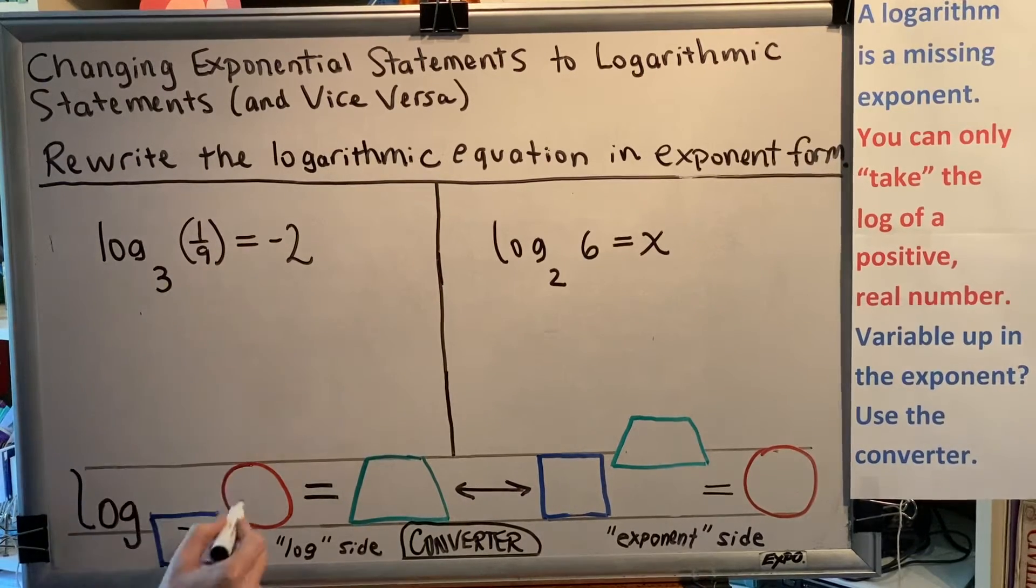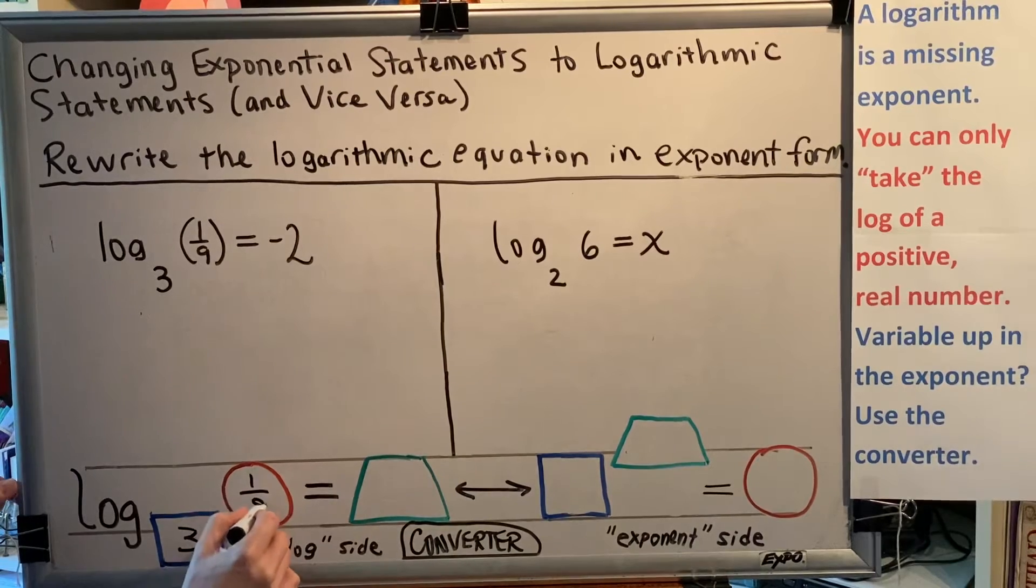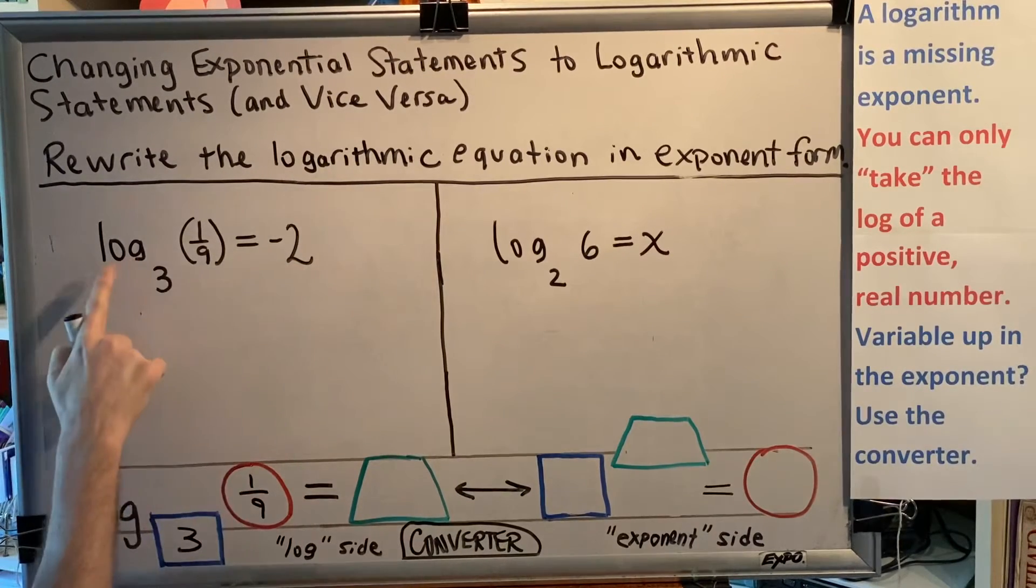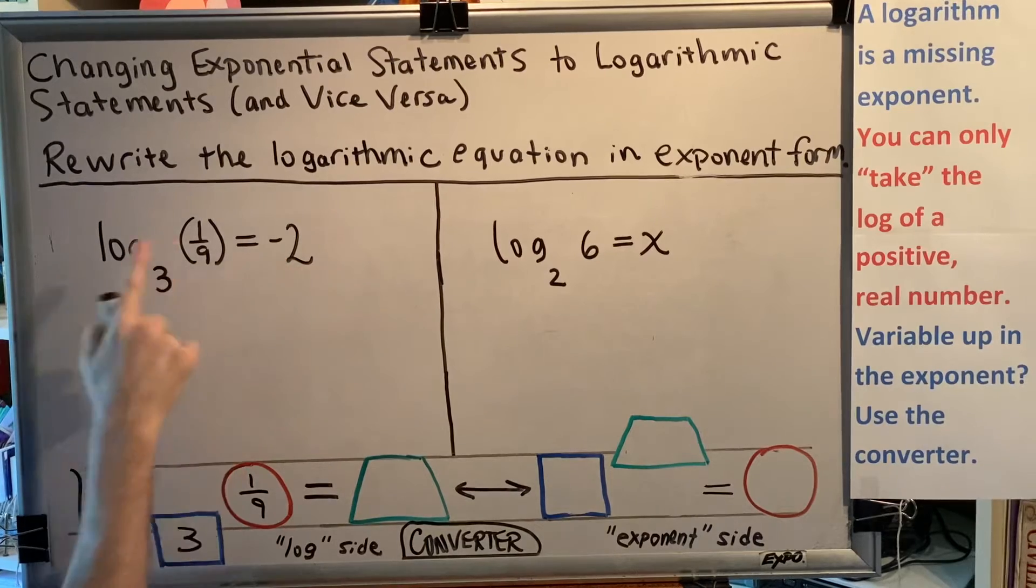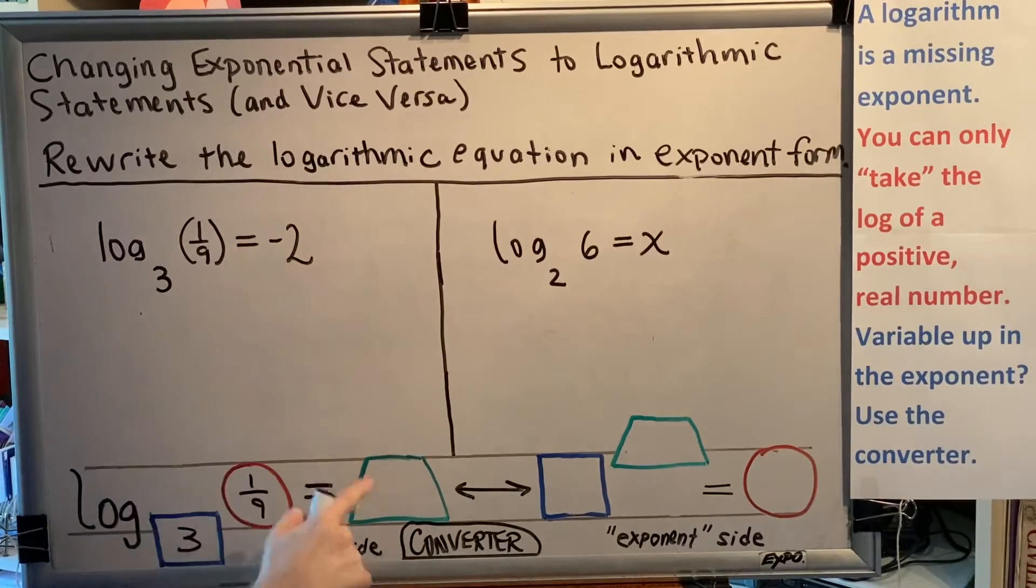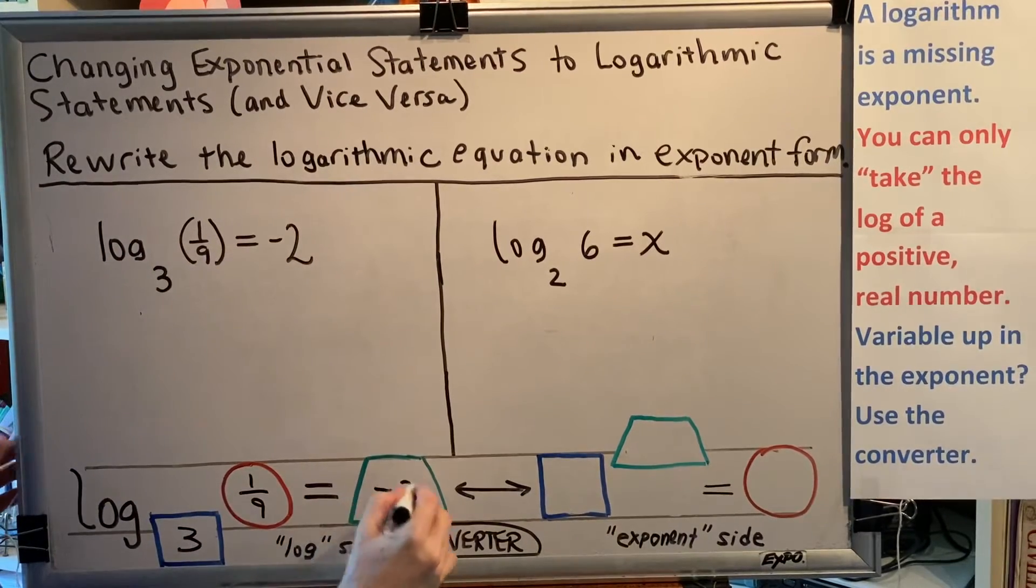The 1/9 is the argument that goes in the red circle. The negative 2 is the exponent, because a log equals an exponent. A log is a missing exponent, and that goes here in this space in the green trapezoid.